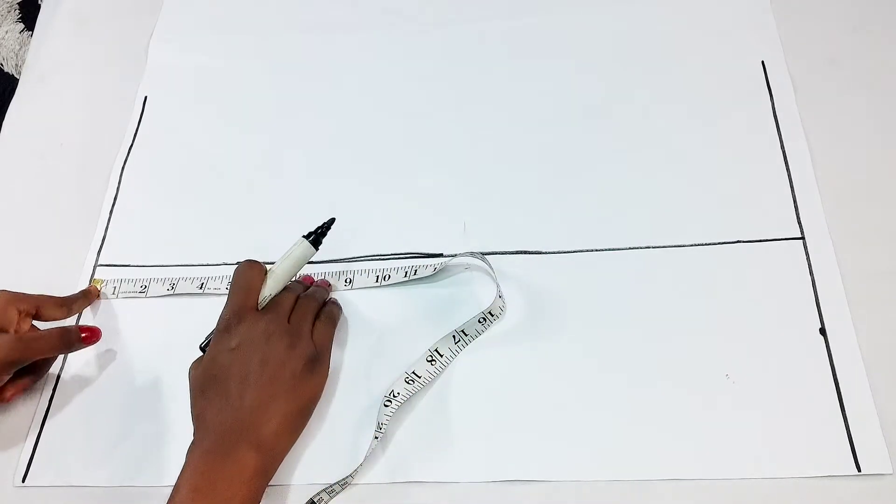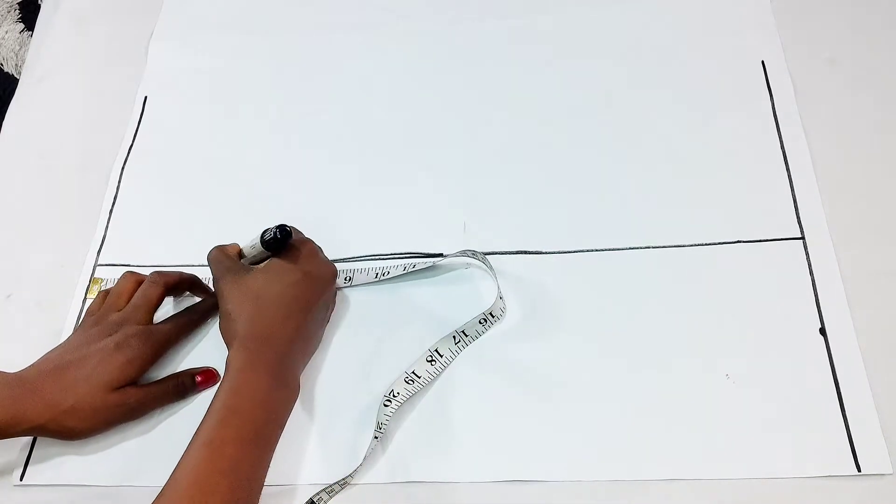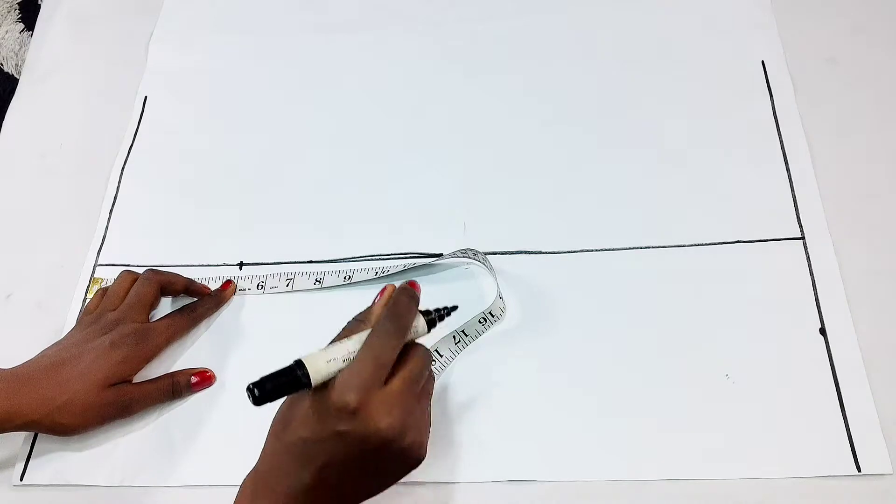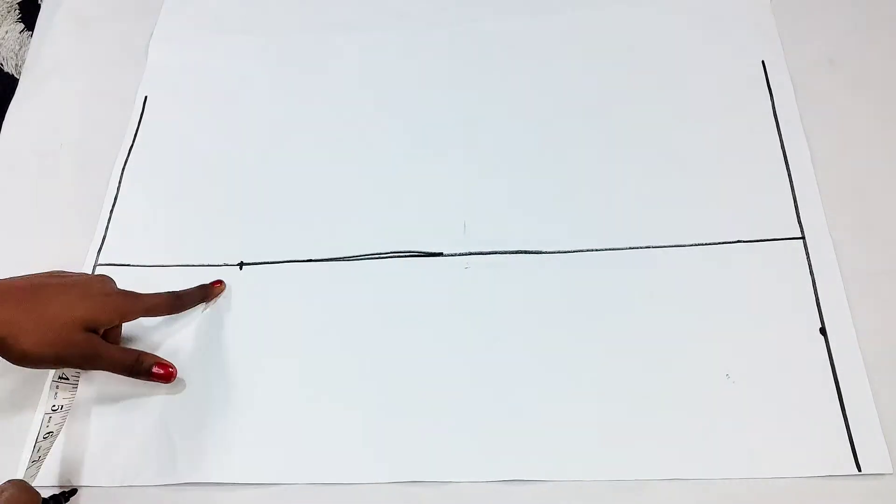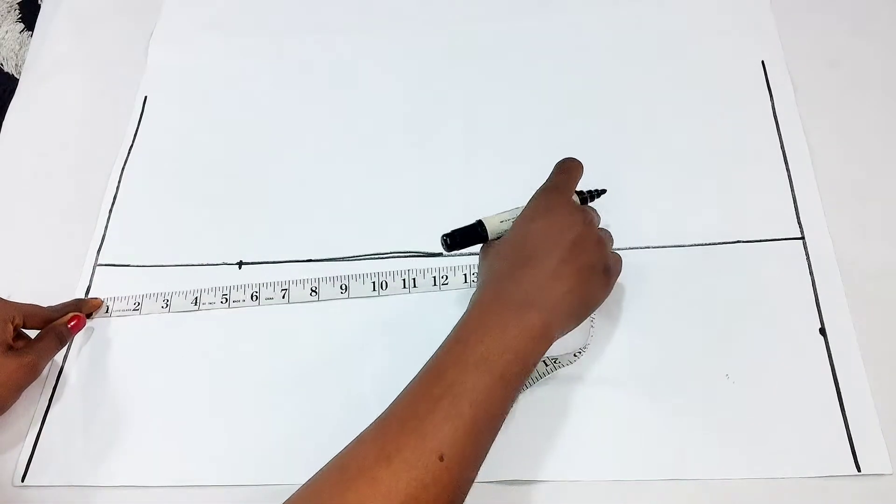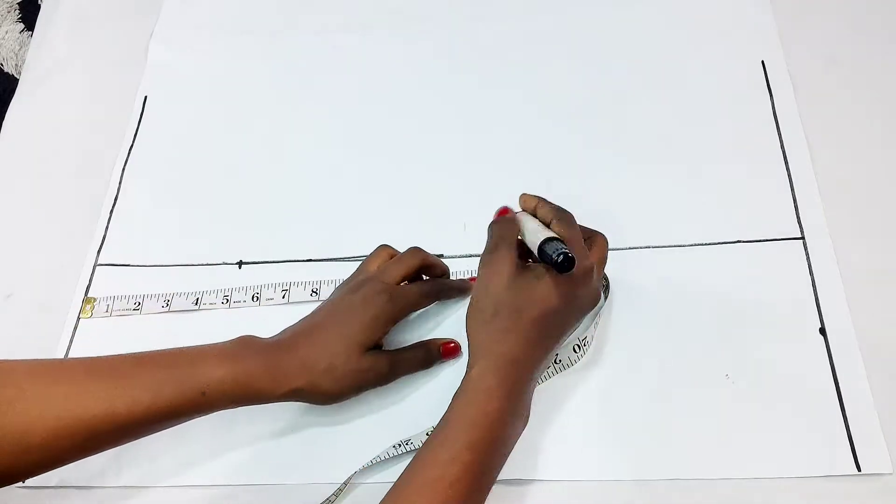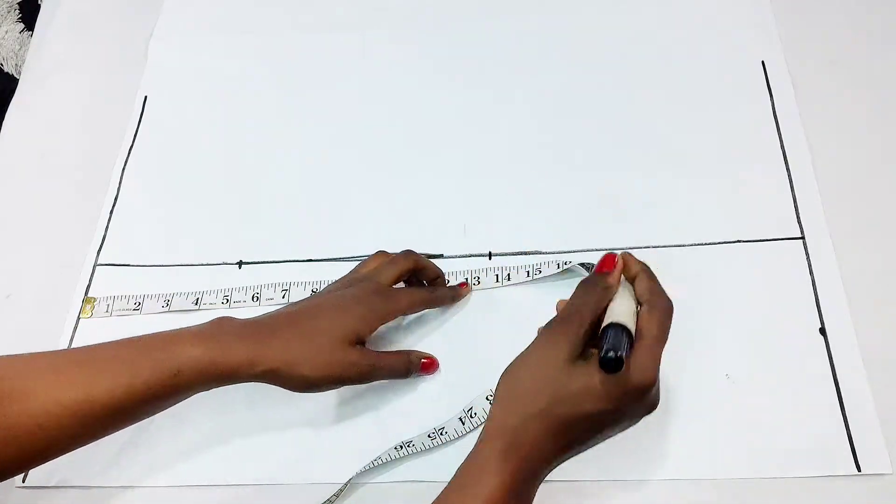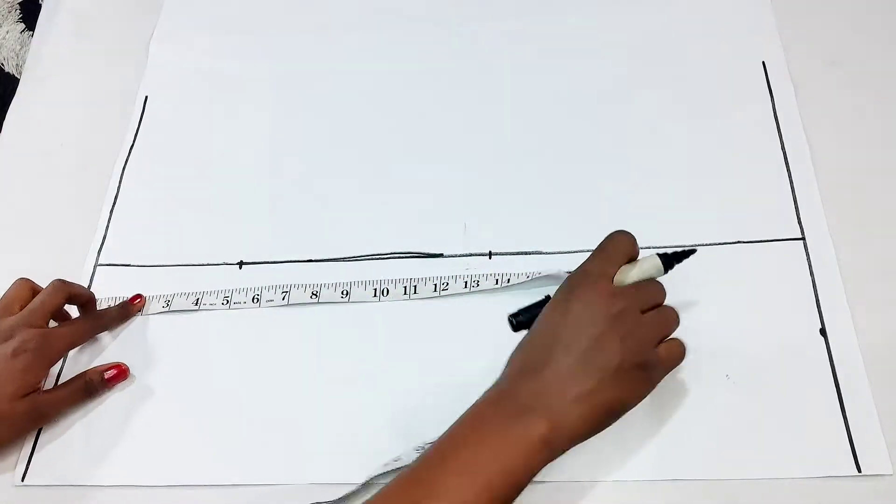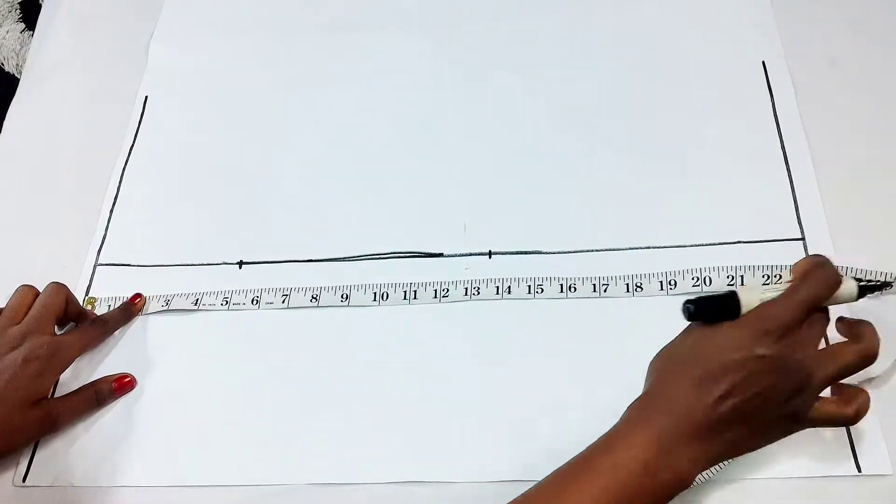Then I go ahead to mark important parts of my sleeve, which are my bicep line and my elbow. My bicep is five inches from my shoulder line, and my elbow is 13 and a half inches from my shoulder line. I'm going to indicate that so you know which line is which.